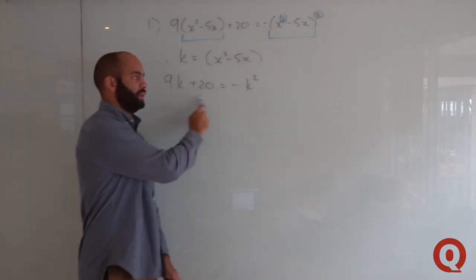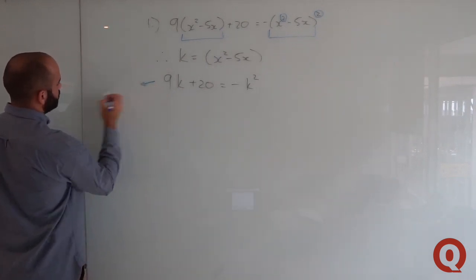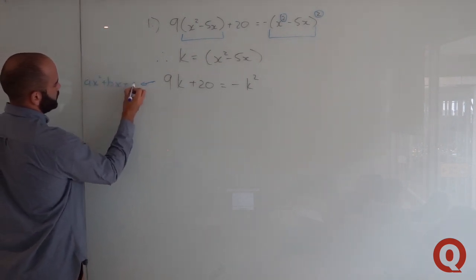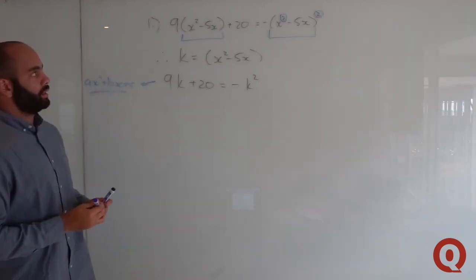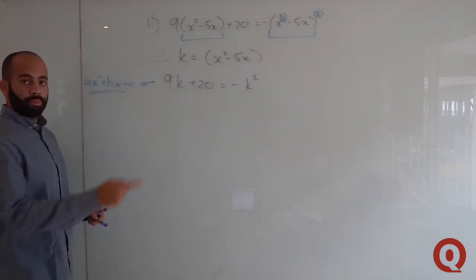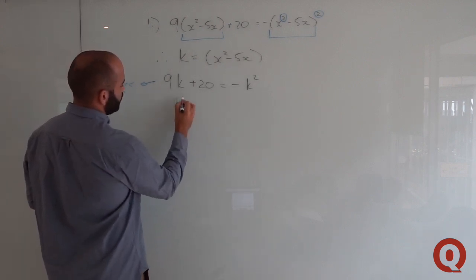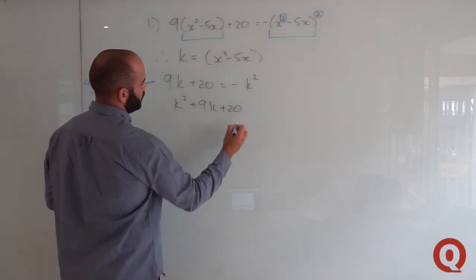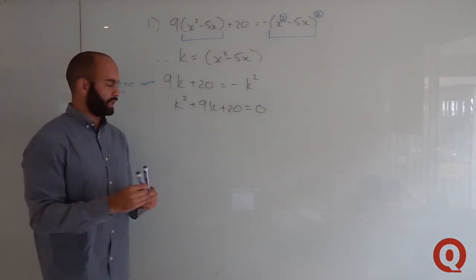This substitution changes the nature of the term but preserves the relationship among all the variables. Our expression now becomes 9k + 20 = −k², which looks similar to your standard ax²+bx+c quadratic form — much easier to work with than an x⁴ expression. Putting it into standard form gives us k²+9k+20 = 0.